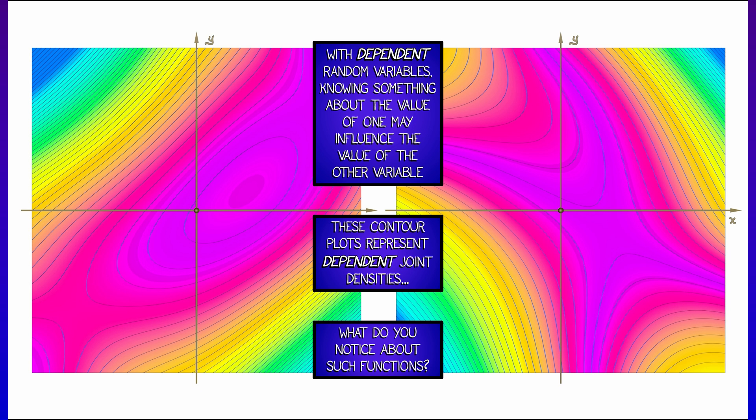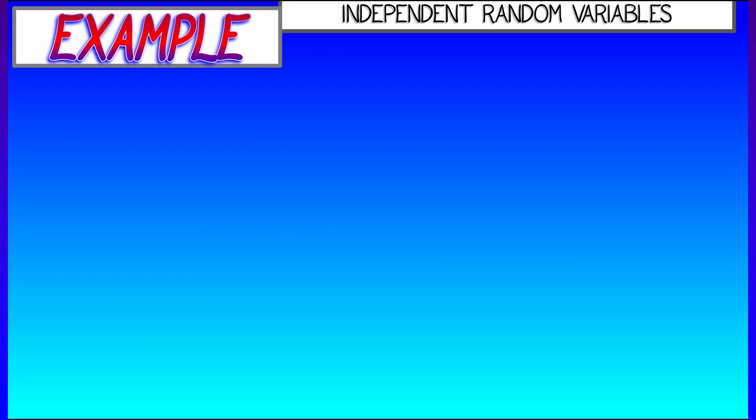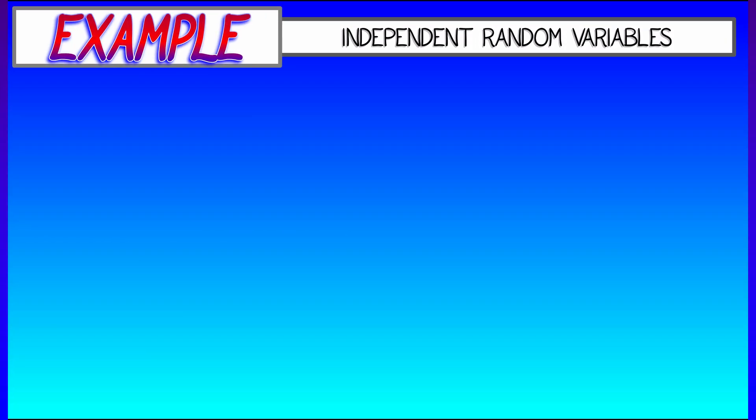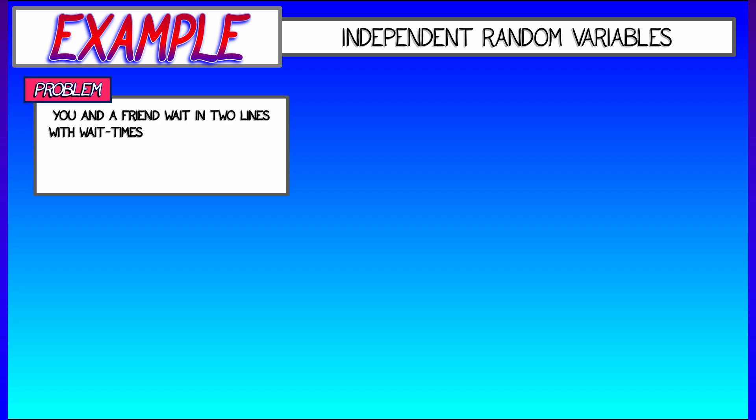Okay, so that's what things look like, but how do we put this to use? Let's do an example. Let's consider the following problem. Let's say that you and your friend are waiting in two lines, and the wait times for those lines are independent random variables with exponential densities. What are the odds that you get through your line first before your friend gets through their line?